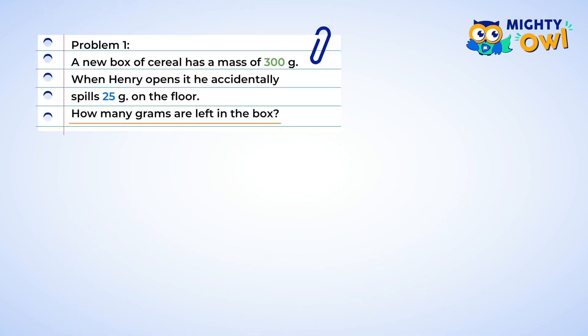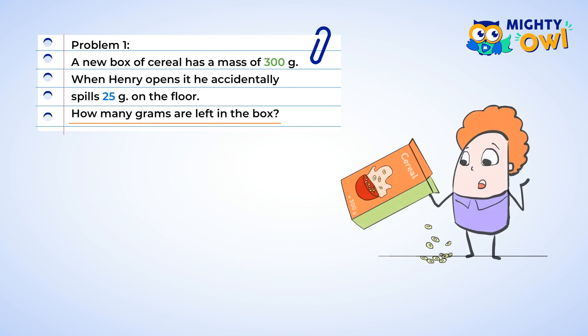A new box of cereal has a mass of 300 grams. When Henry opens it, he accidentally spills 25 grams on the floor. How many grams are left in the box? Well, when the cereal spills, this means that we're going to have to subtract that amount from what we started with. This gives us the equation 300 grams subtract 25.